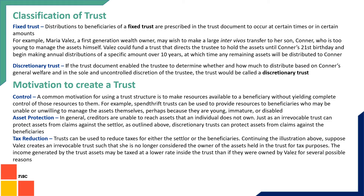In a discretionary trust, it is based on the knowledge and judgment of the trustee — the trustee decides when and how to pay the amount to the beneficiary. There is discretion involved and nothing is fixed, which is why it is called a discretionary trust.